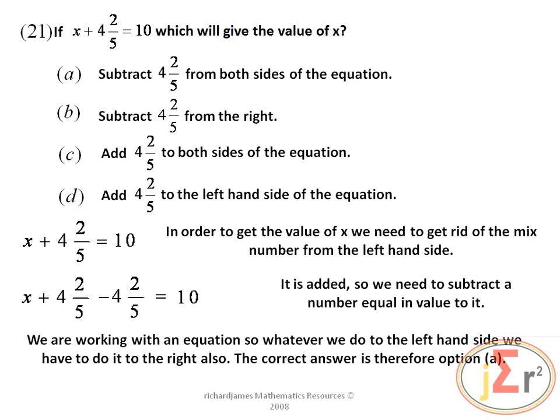The correct answer is therefore option A. Let us first take the 4 and 2 fifths from the right hand side also. So we are going to subtract 4 and 2 fifths from both sides of the equation, and the correct answer is option A.